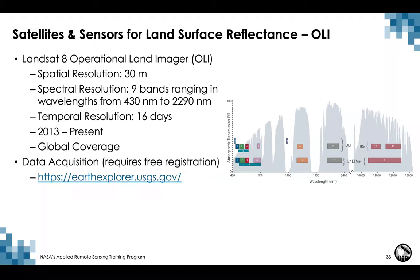The Operational Land Imager (OLI) has a moderate spatial resolution of 30 meters with a 15-meter panchromatic band. Spectral resolution consists of nine bands comprising the visible, near-infrared, and short-wave infrared wavelengths. The revisit time is 16 days, which can be a challenge in cloudy conditions. Level 2 surface reflectance data products can be acquired from the EarthExplorer website as either on-demand or analysis-ready data products.